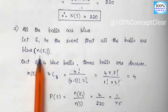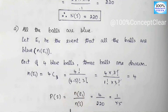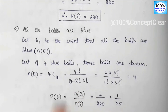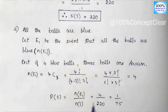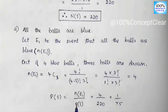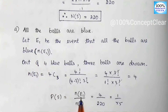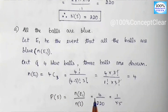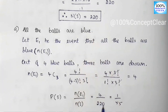The probability formula is P(E1) = n(E1) divided by n(S). n(E1) = 4, divided by the sample space 220. Reducing, the answer is 1 by 55. So P(E1) = 1/55.